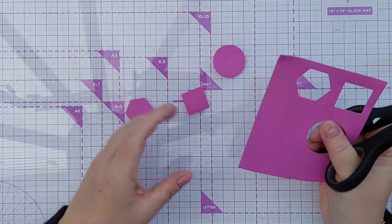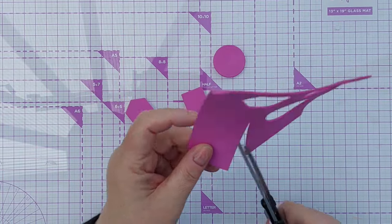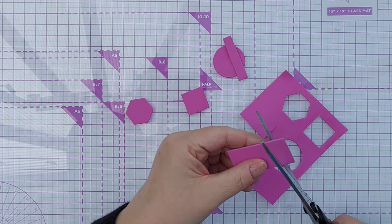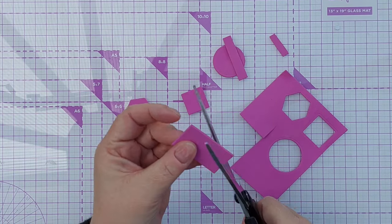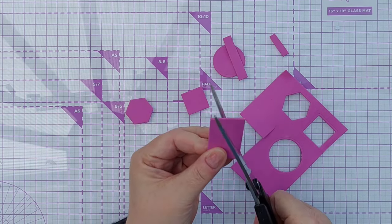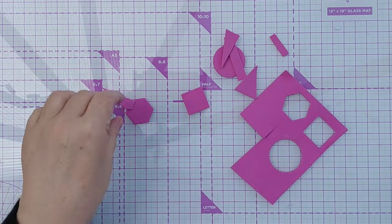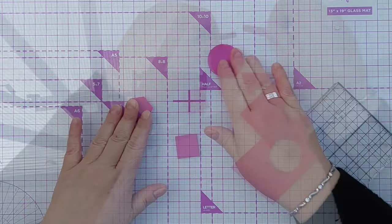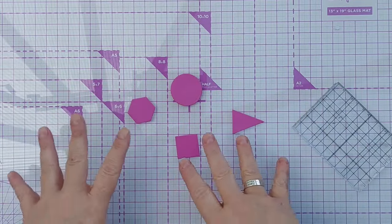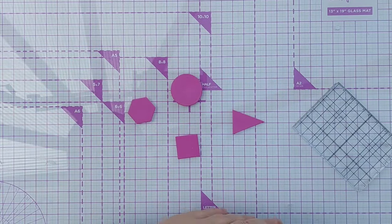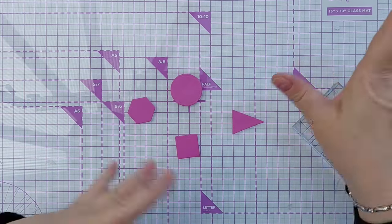As well as die cutting out your shapes, you can also just cut them with scissors. So I'm going to cut a triangle. It's going to be an irregular triangle but a triangle nonetheless. And obviously with this technique you're not restricted to geometric shapes. You can cut out whatever shapes you like: leaves, butterflies, flowers, etc.